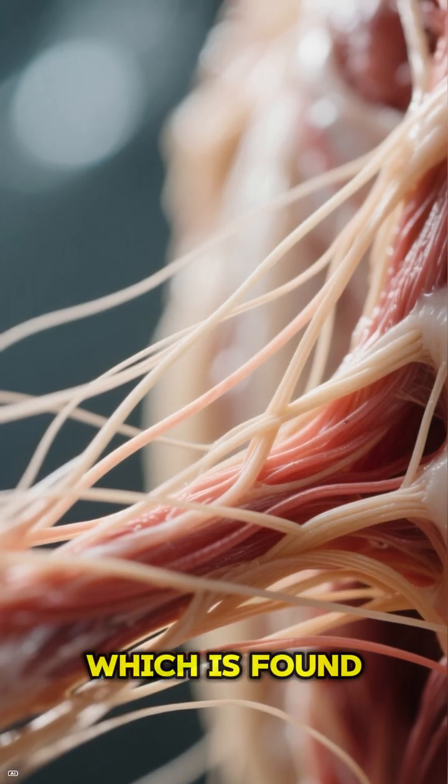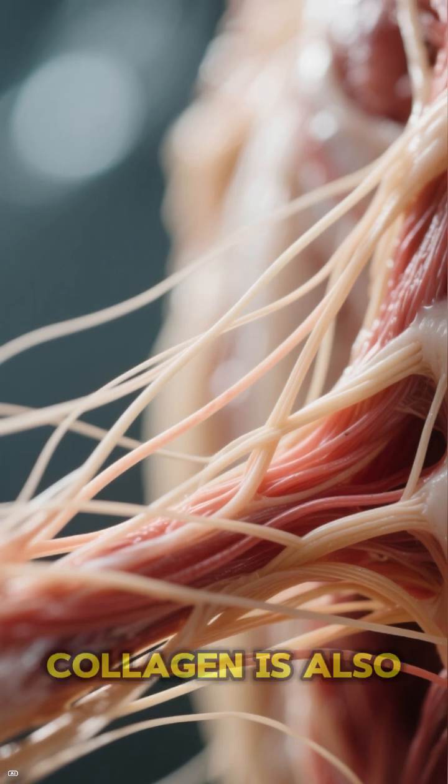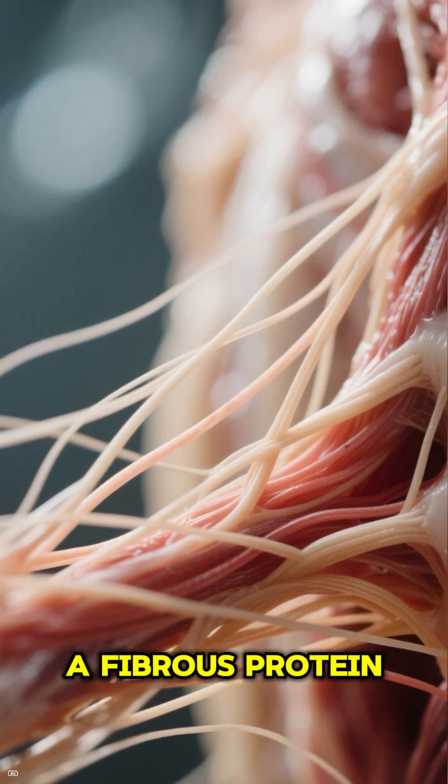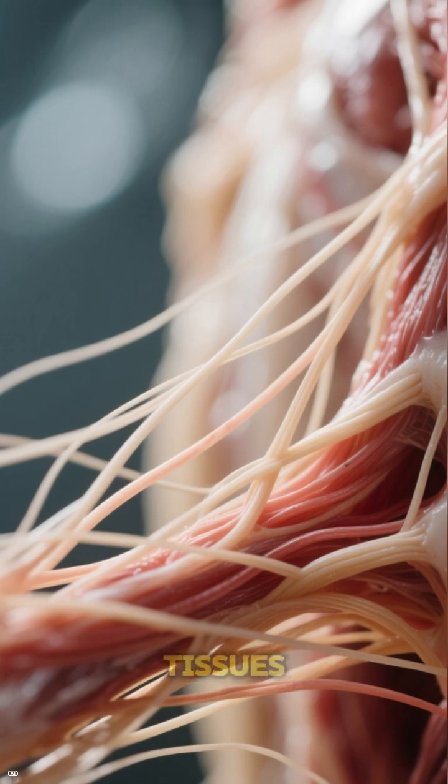Another example is collagen, which is found in tendons. Collagen is also a fibrous protein, providing the strength and toughness needed in these tissues.